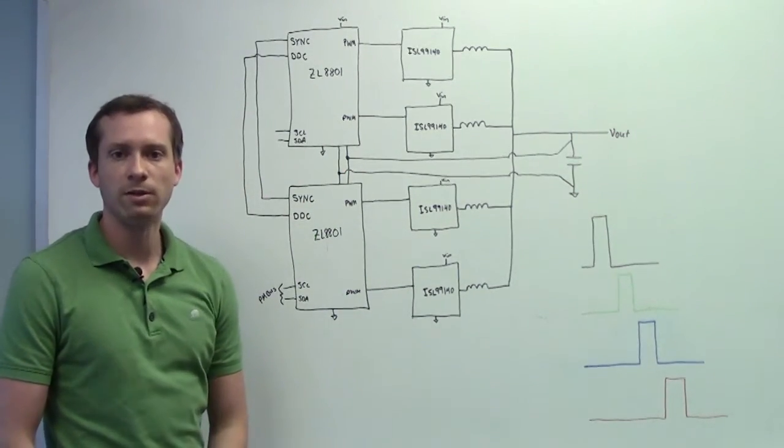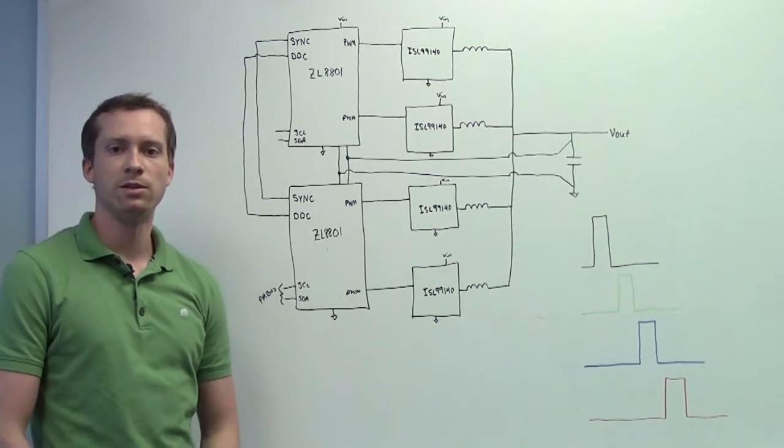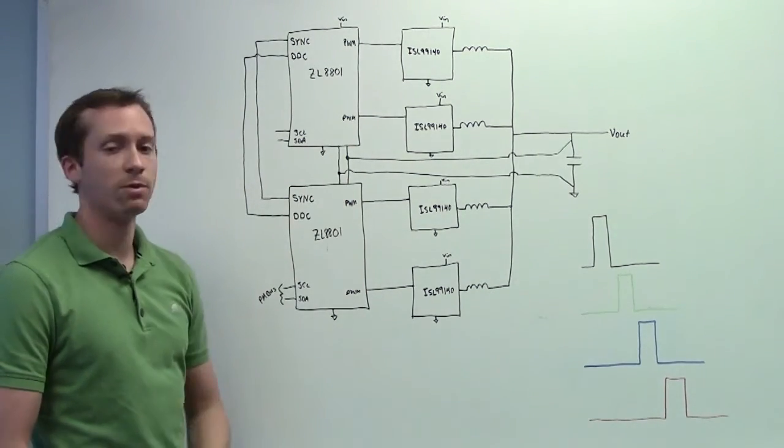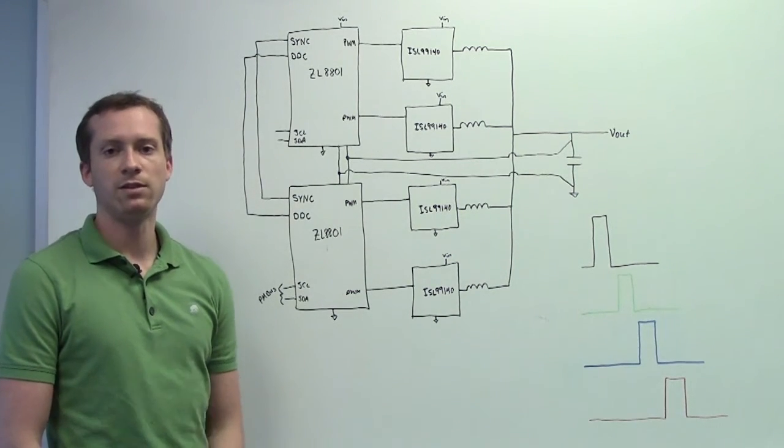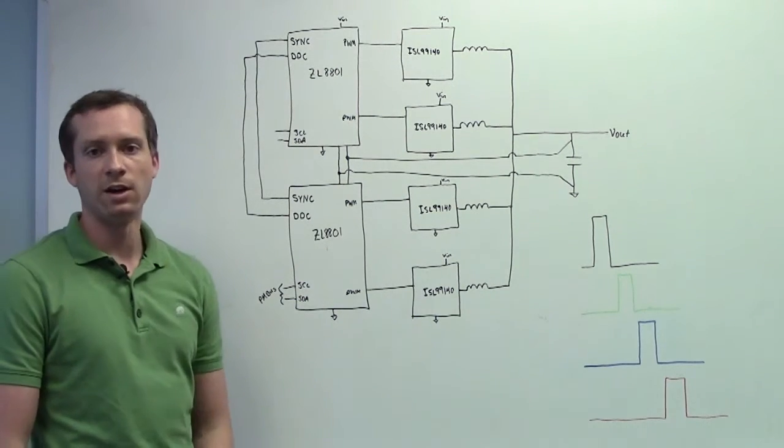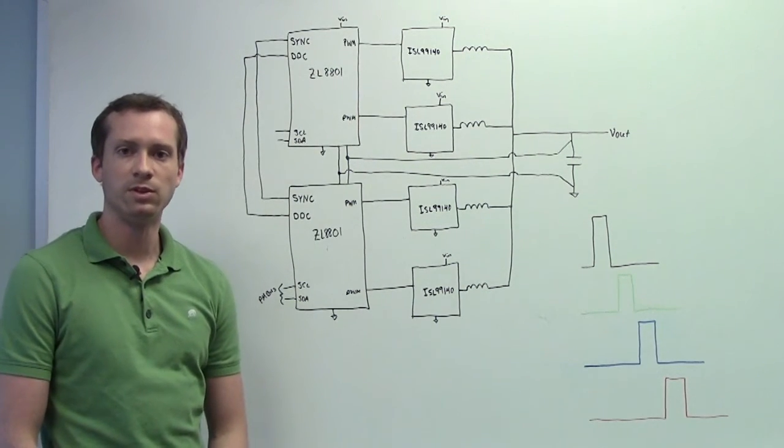By separating the 90-degree increments, you effectively multiply your switching frequency by four. So in a 500 kilohertz per phase application, you're looking at an effective switching frequency of two megahertz. This can allow for very low output ripple and also helps improve the transient performance.